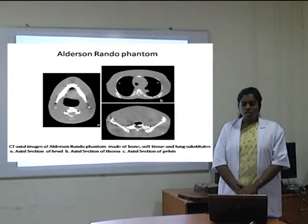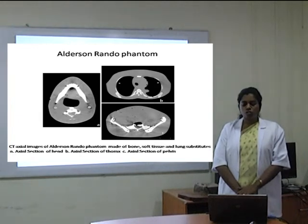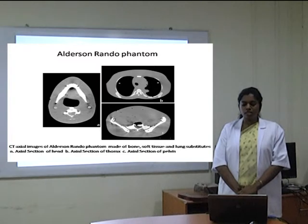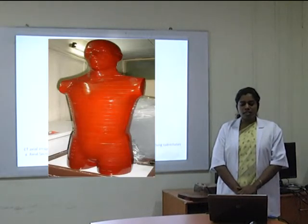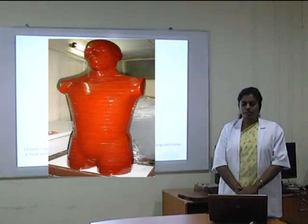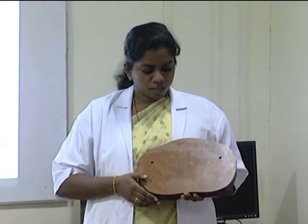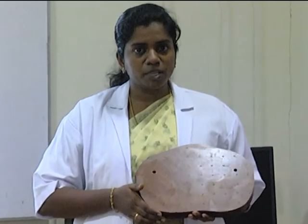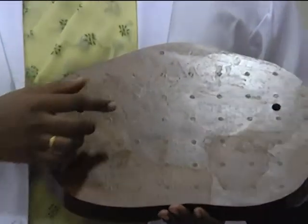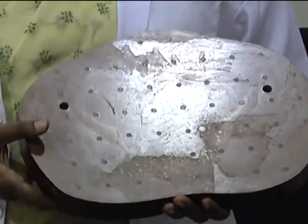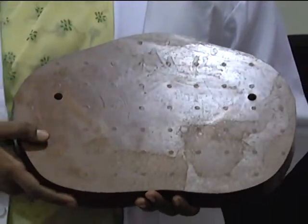Phantoms are structures made of one or more tissue substitutes used to simulate radiation interactions in the human body. For example, the Alderson Rando Phantom is currently widely used for radiation dosimetry. This is a section of the Alderson Rando Phantom, which shows that it is made of bone, soft tissue, and lung substitutes, but it has no organs in it.